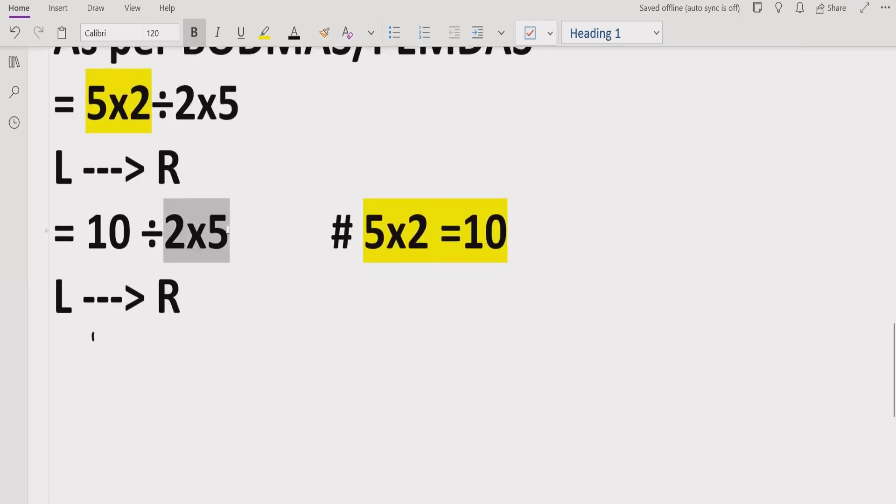Now again we have to go left to right and see which part we will solve first. As I told you in the previous solution, some people multiply this one, but if you multiply first you will get the wrong answer. You have to divide first: 10 divided by 2. So you have to divide it first. 10 divided by 2 equals 5, and after that multiply by 5.